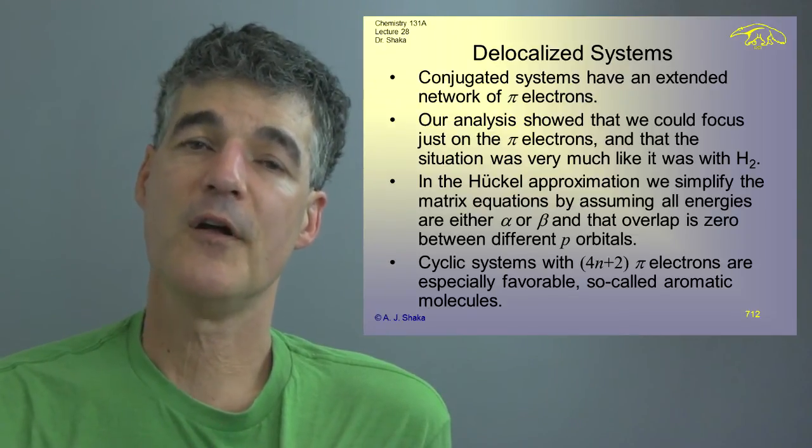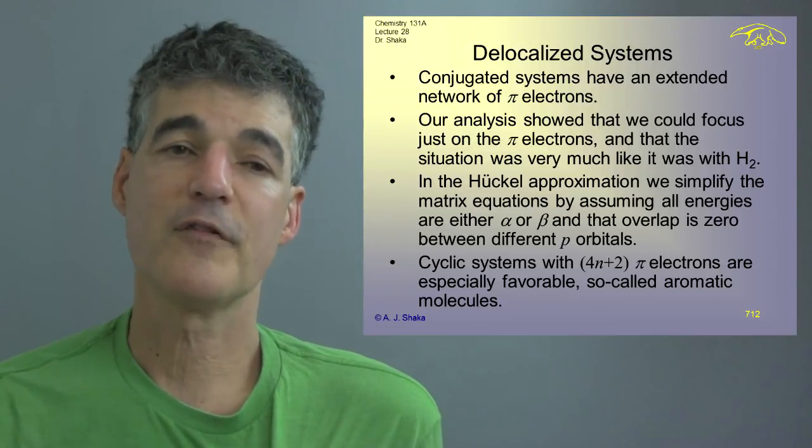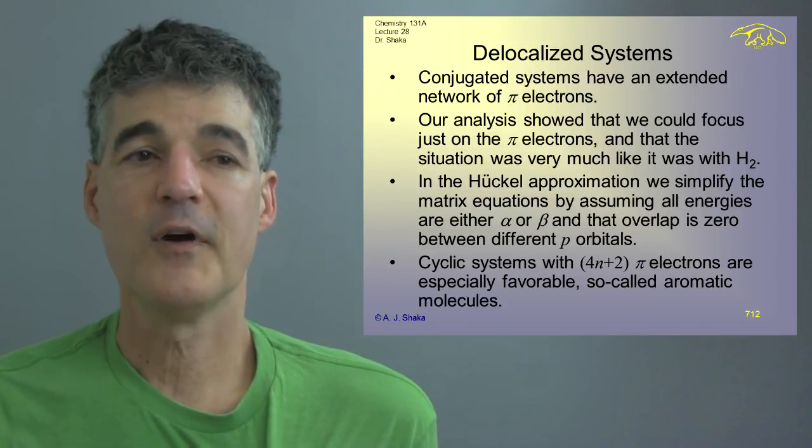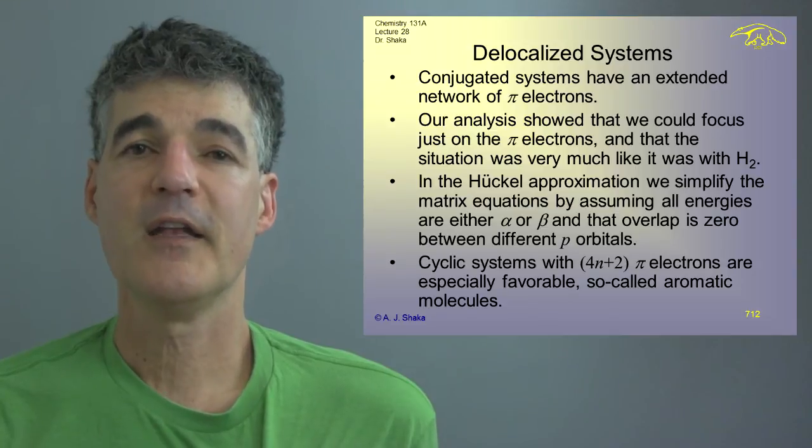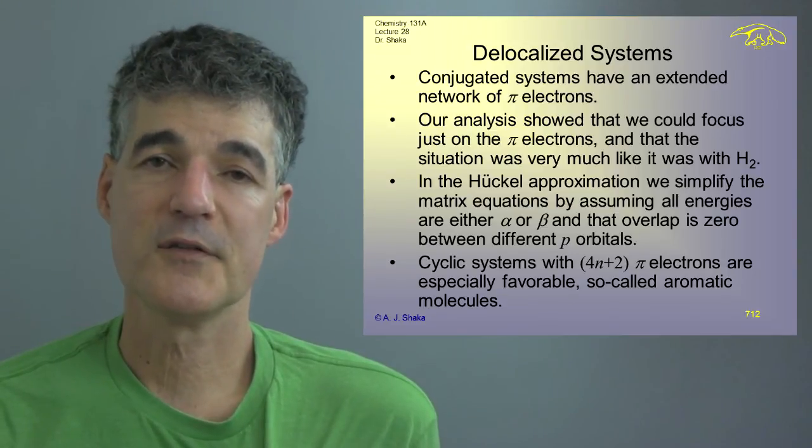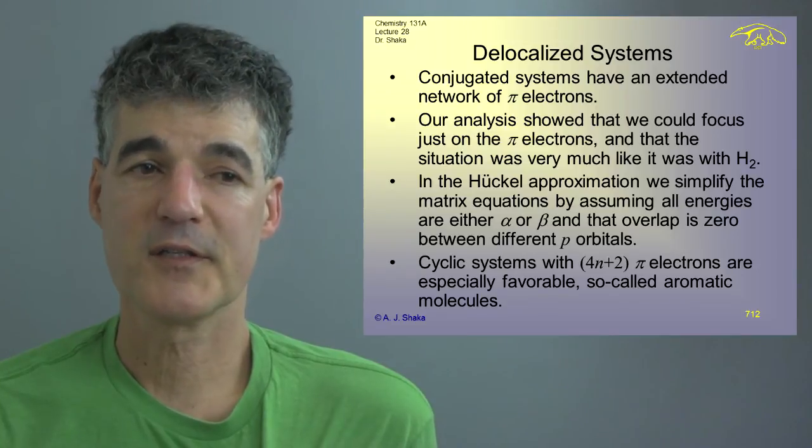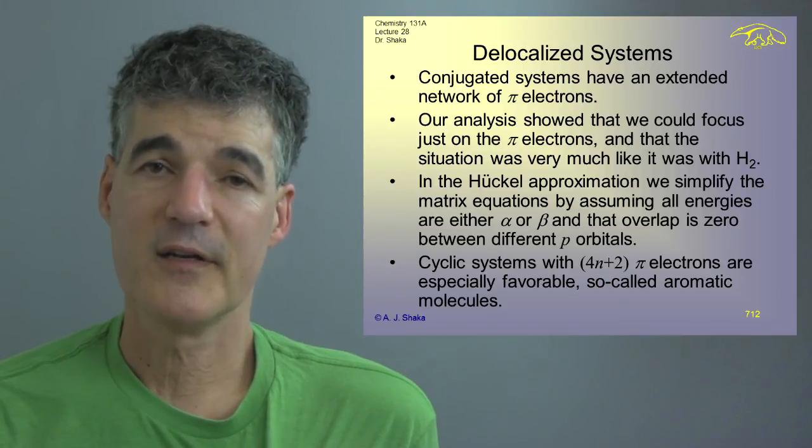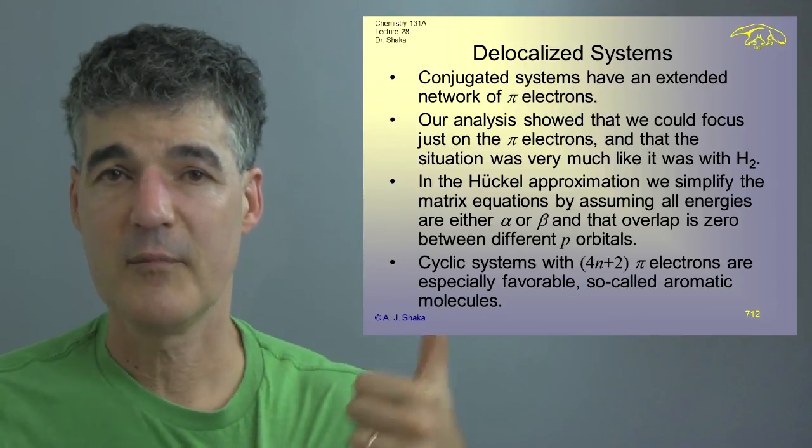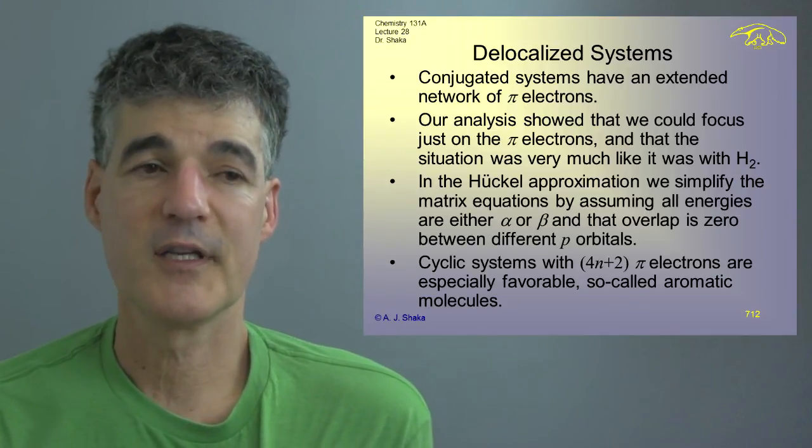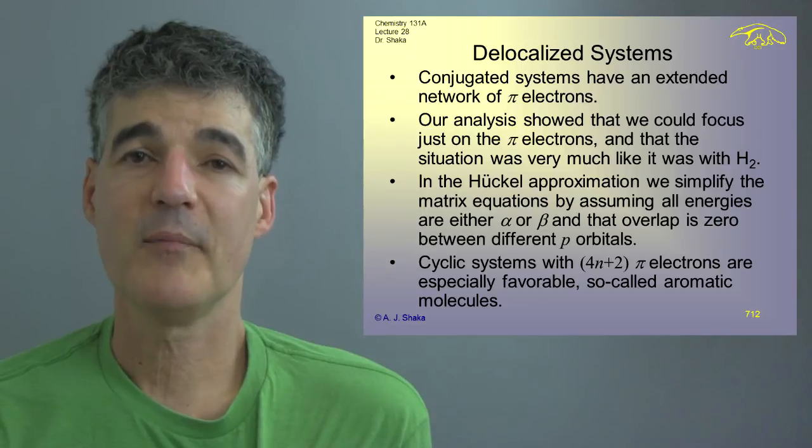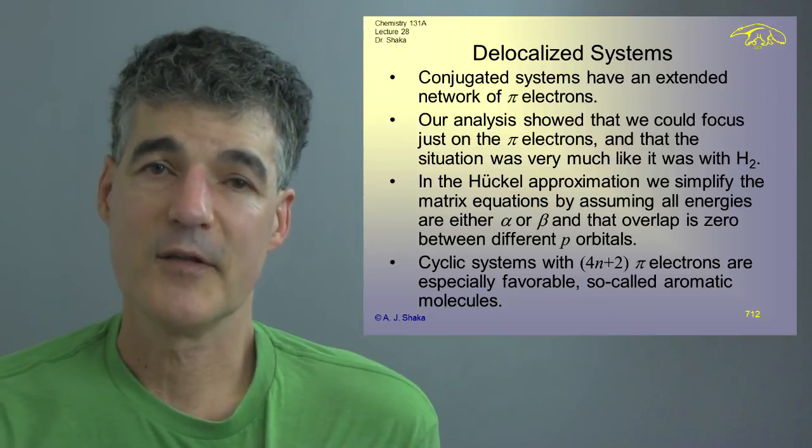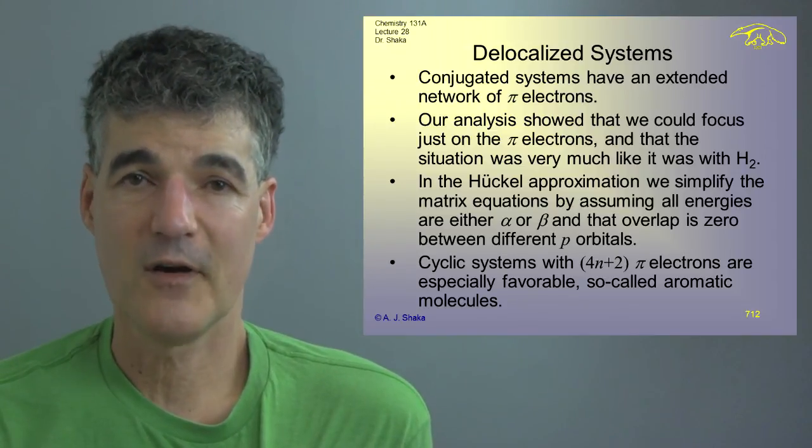So you have some energy terms we called alpha and some, and we said they're all the same for identical carbons. And then some energy terms we call beta, the off diagonal ones. And then you can solve that and you find that cyclic systems with 4N plus 2 pi electrons are especially favorable. When we did the same kind of thing for cyclobutadiene, we predicted a diradical instead because the two energy levels were the same. That could be what happens or it could be that the molecule distorts so that one's lower but then it's localized bonds if it does that because we'd have to solve it over.